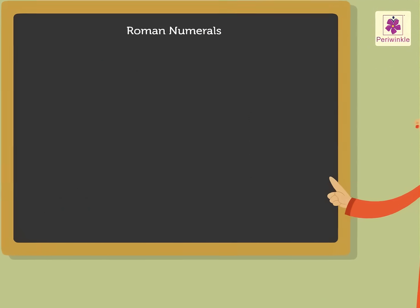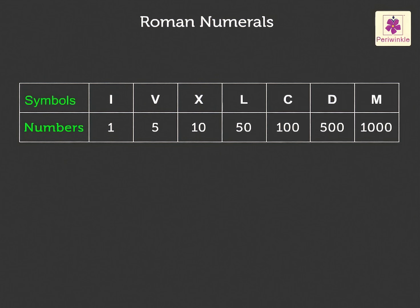Here are the letters used to write the numbers. The symbol I is equal to 1. V is equal to 5. X is equal to 10. L is equal to 50. C is equal to 100. D is equal to 500. And M is equal to 1000.